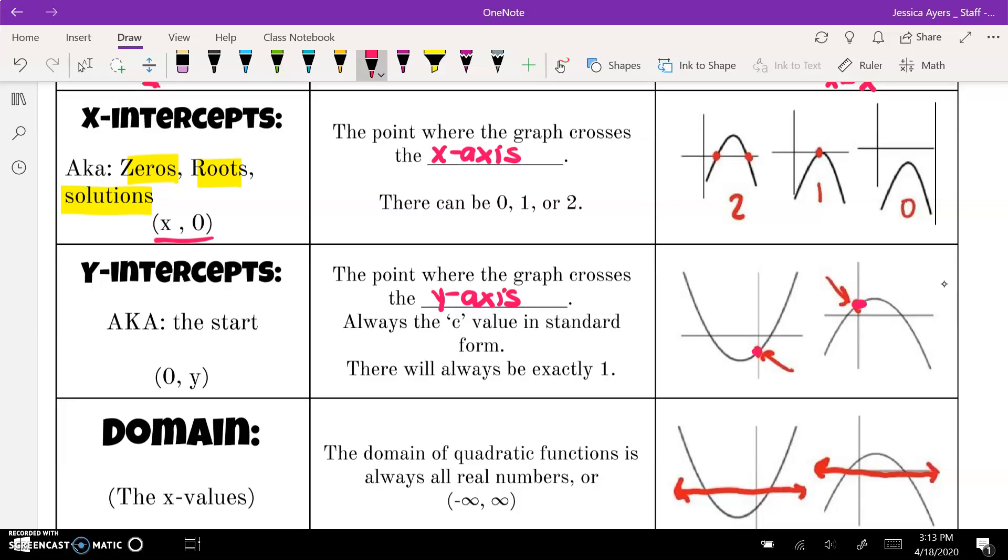And we see them right here on our graph. Again, remember the point to write it as zero comma y. A lot of times when we talk about the y-intercepts in context, it's the starting point because that's when time is zero.